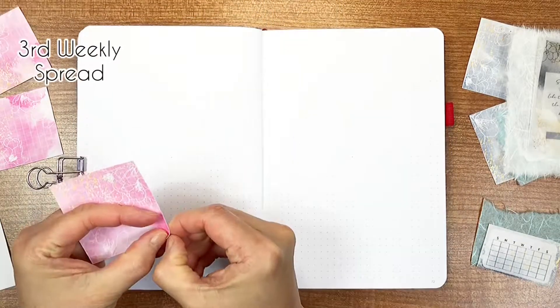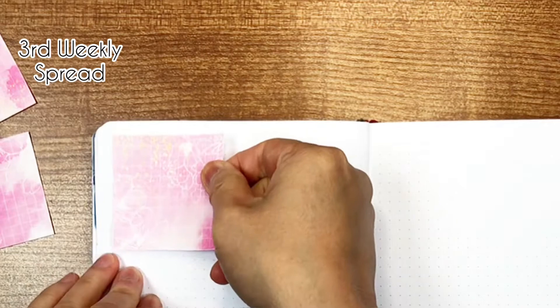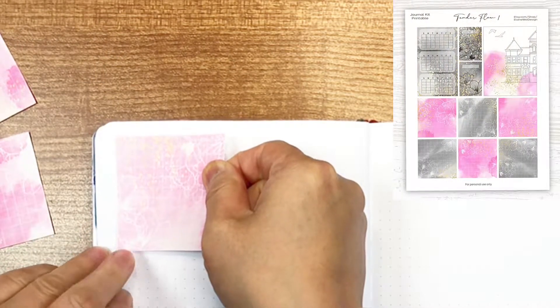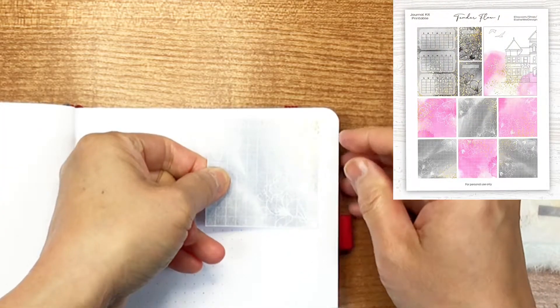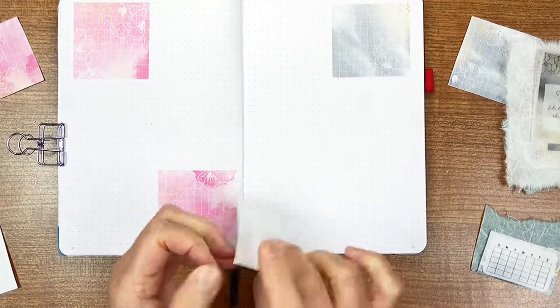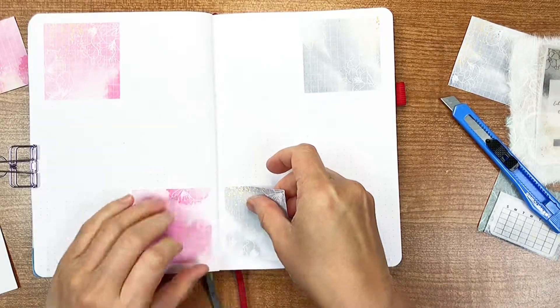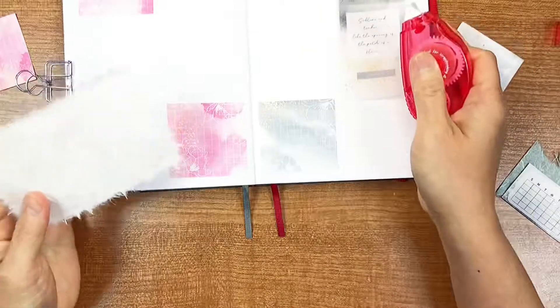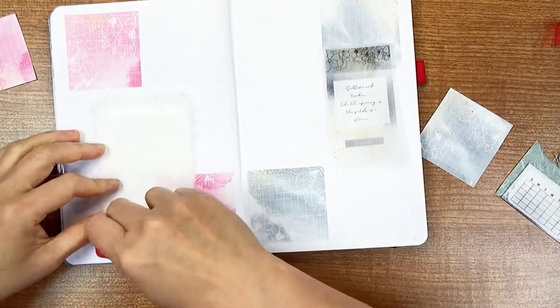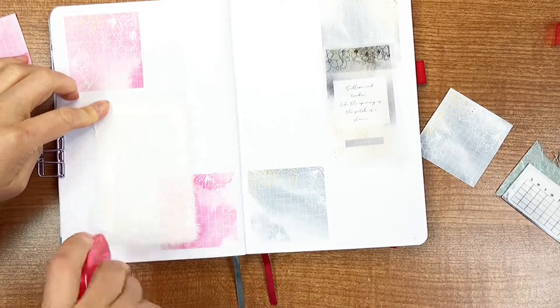Now, I'm creating my third weekly spread. I made 6 notepad style boxes in this printable, so I'm using them for each day of the week by putting the weekends in the same box. Here, I'm sticking a white textured mulberry paper onto the page.